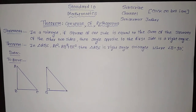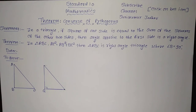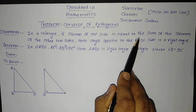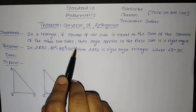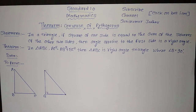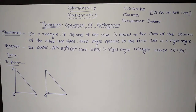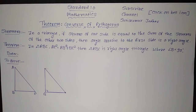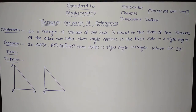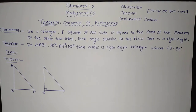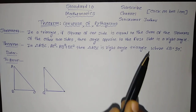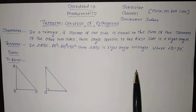Here we are going to learn about the Converse of Pythagoras theorem. Let us see what the converse statement is: In a triangle, if the square of one side is equal to the sum of the squares of the other two sides, then the angle opposite to the first side is a right angle. We know the Pythagoras theorem states that in a right angle triangle, square of the hypotenuse equals the sum of squares of both sides. In the converse, the condition and conclusion are swapped: if square of one side equals sum of squares of the other two sides, then such a triangle is a right angle triangle.